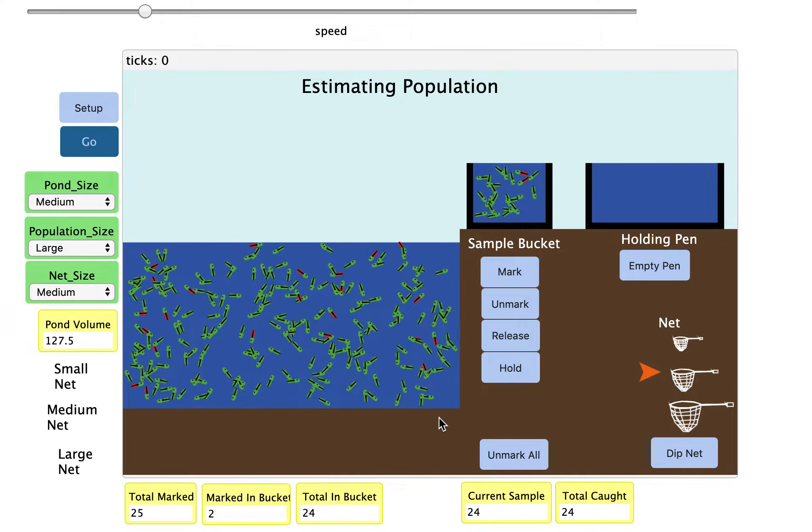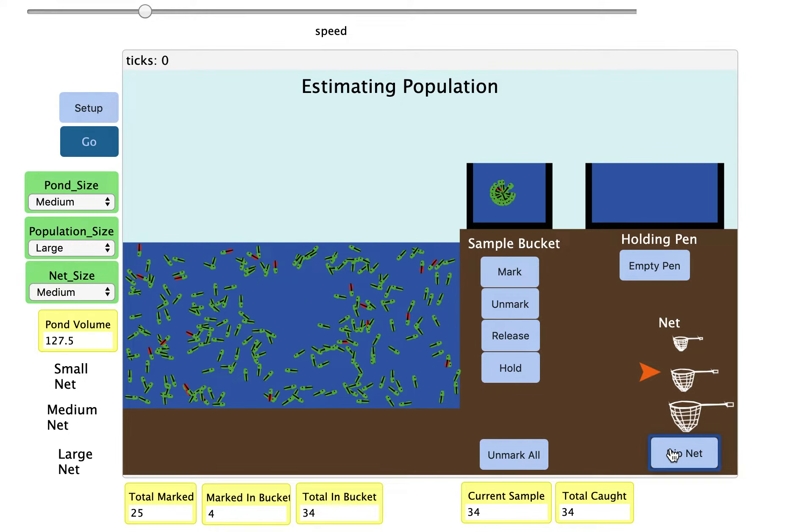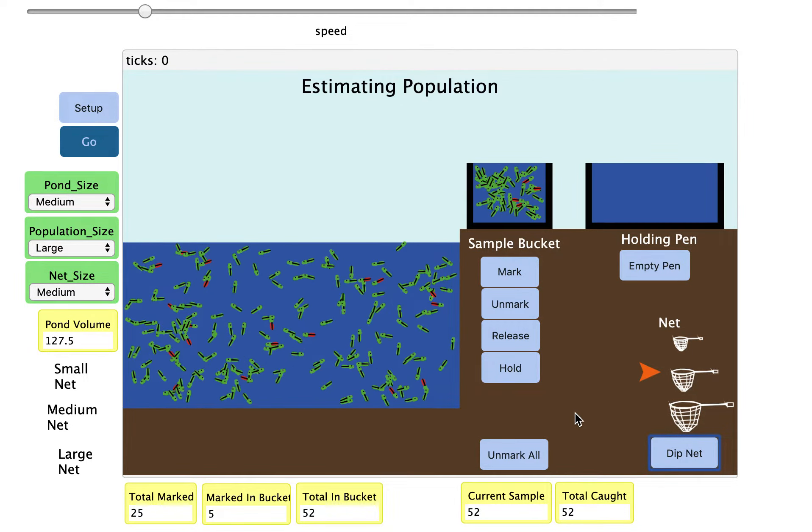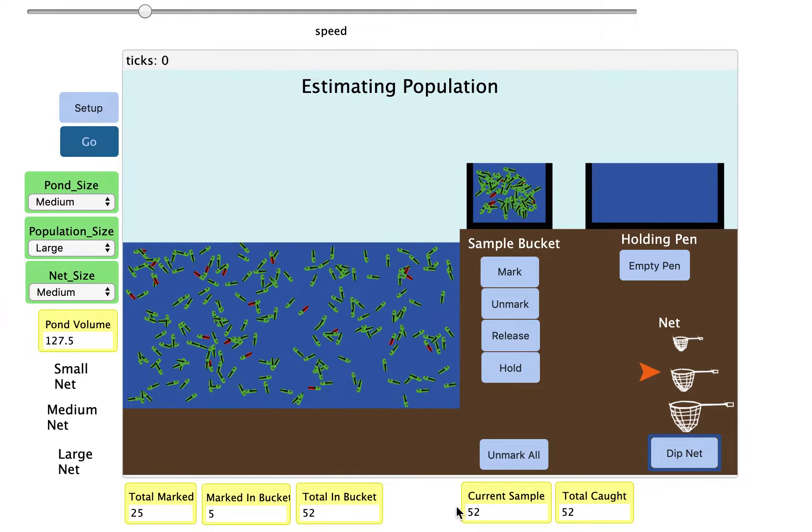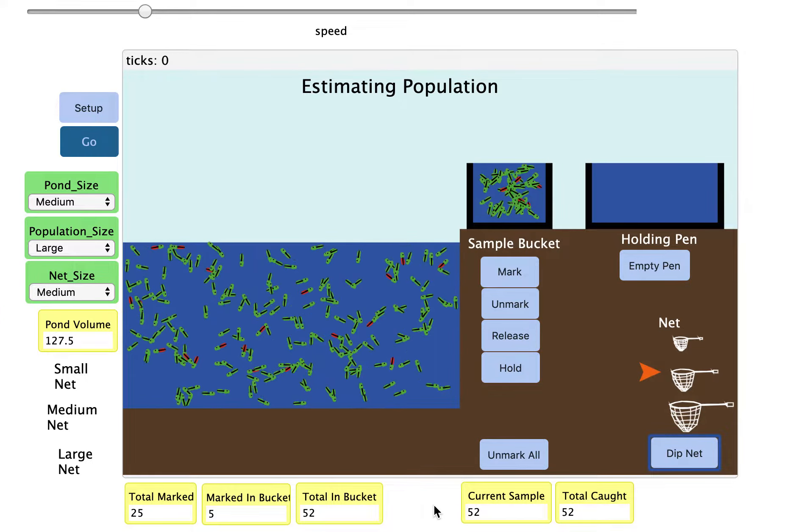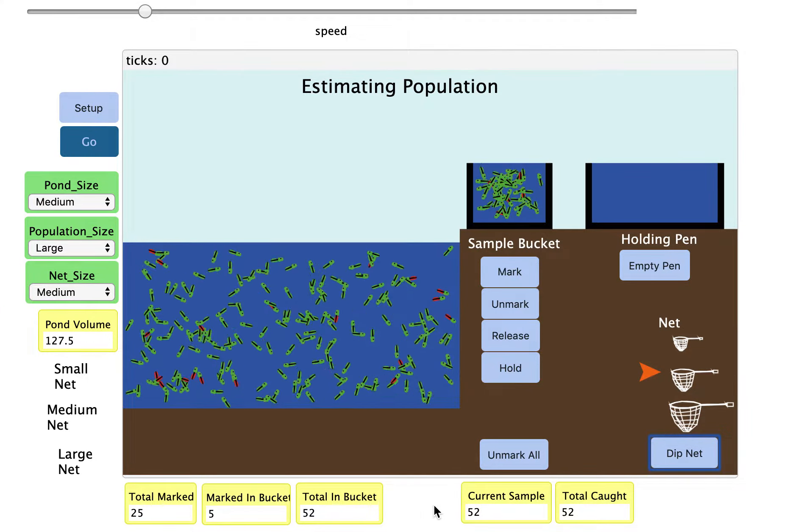Now we're going to release the fish and catch a bigger sample. I'm going to dip my net twice so now I have between 40 and 60 fish in my sample bucket. I have 52 fish in my sample bucket, and I'm going to do the same thing again.